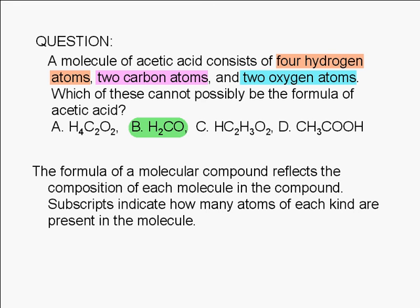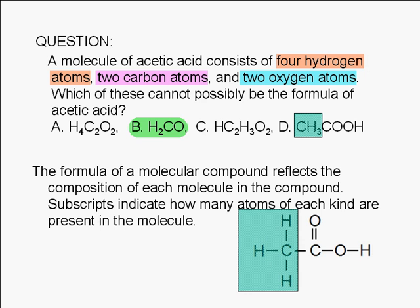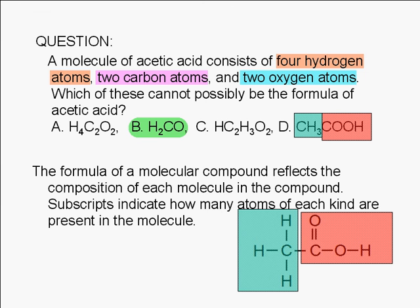The formula in choice C represents the way the atoms are connected in the molecule. Here's CH3, here's COOH, and here's the hydrogen atom that can break off as a hydrogen ion when acetic acid is dissolved in water.